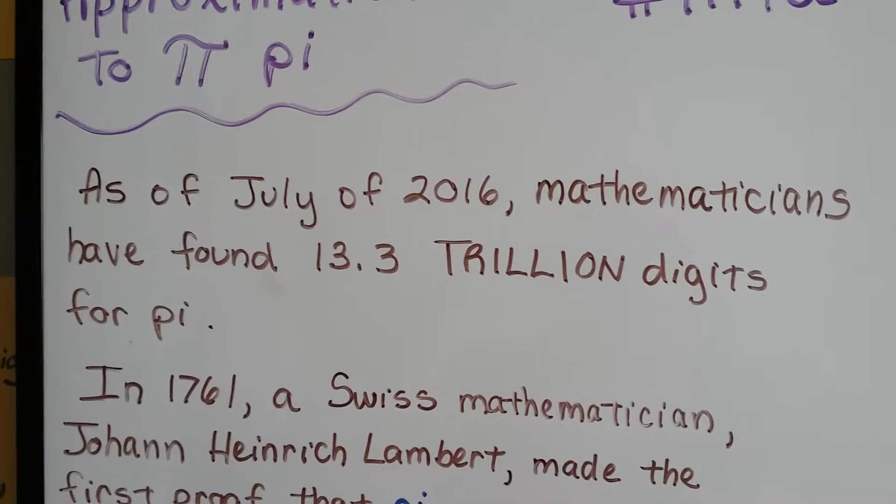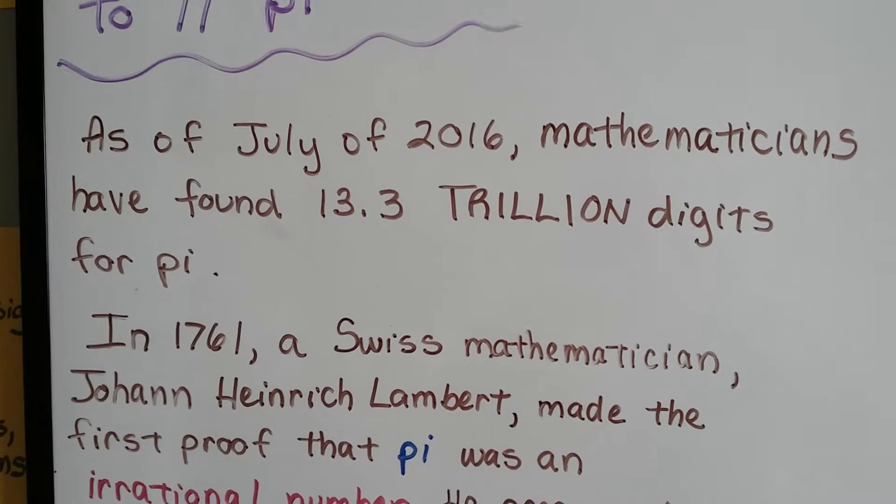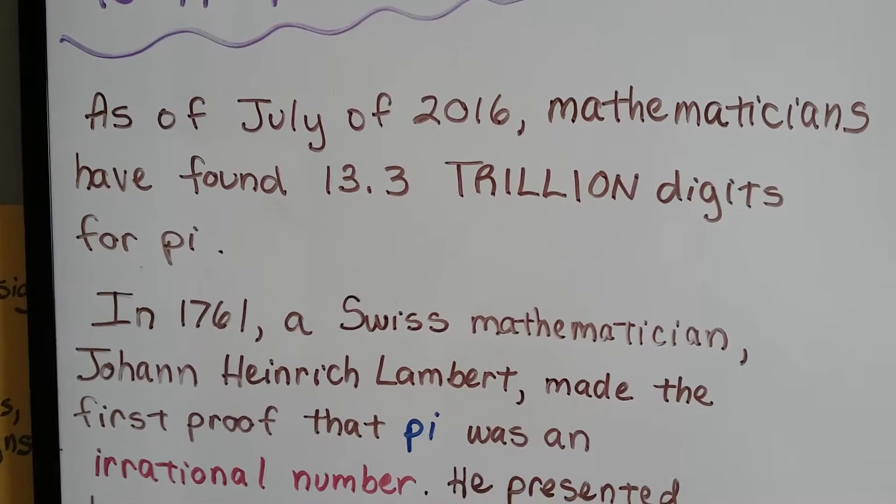As of July 2016, mathematicians have found 13.3 trillion digits for pi.